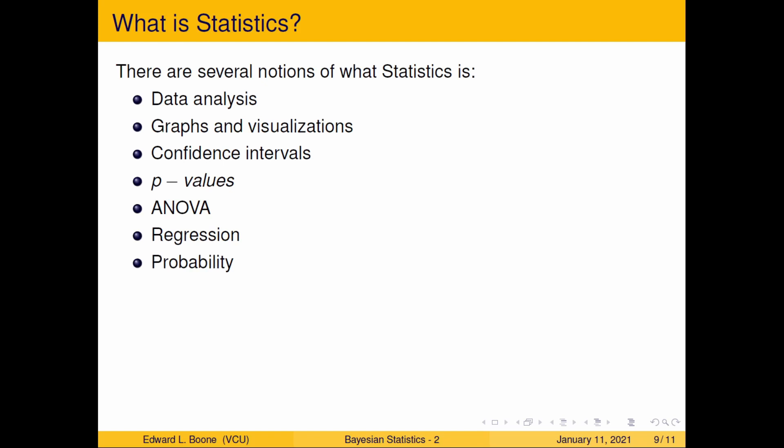You might hear somebody say probability, because you use those probability tables and people talk about probability a lot — and will we be talking about probability a lot? Yes. But that's only a part of it. So we really need a good, cohesive definition of what statistics is, so it doesn't just seem like complicated mathematics and formulas going every which way. We need a definition that provides meaningful guidance on what we're doing, what we can do, what we can't do, and how to do it right.